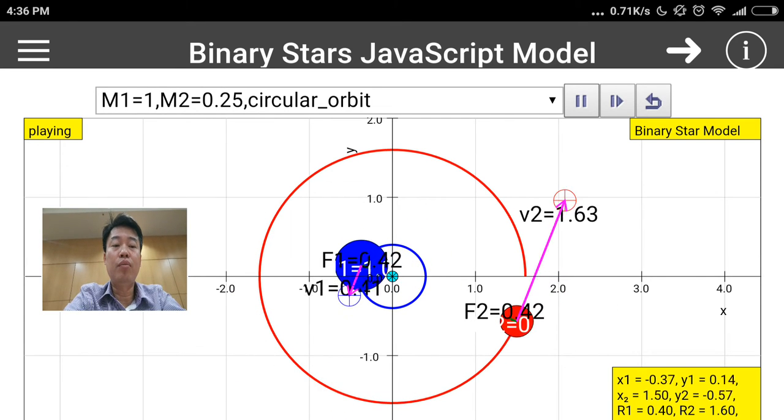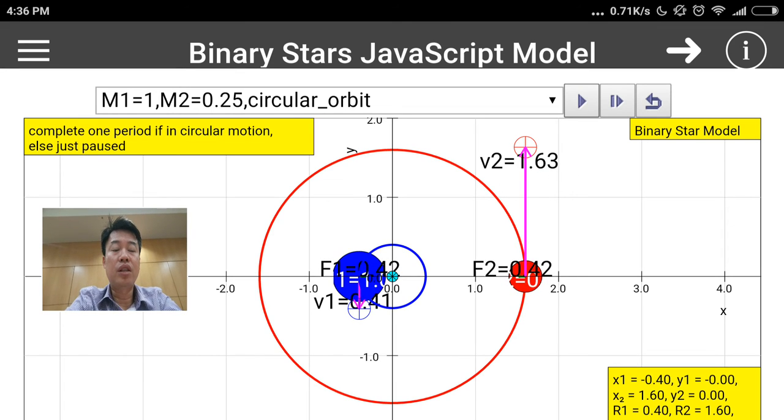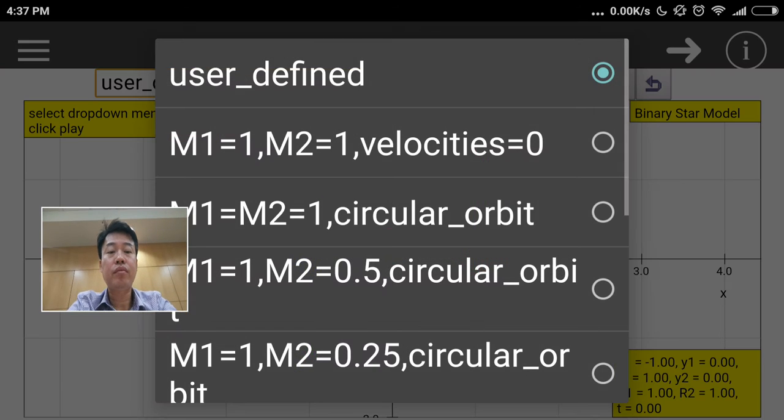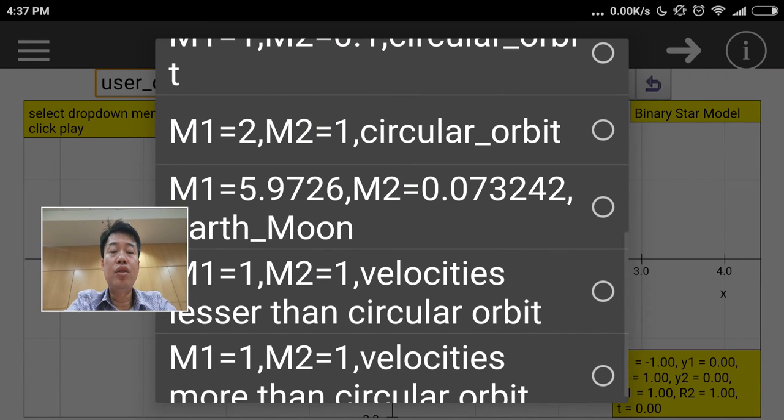Notice that the velocities would have to be varied according to some calculation, and you need to be able to calculate these values. But the fact of the matter is the forces F1 and F2 remain equal, opposite, and on different bodies. You can use R1 plus R2 at the bottom to find out the separation between the two center of masses.